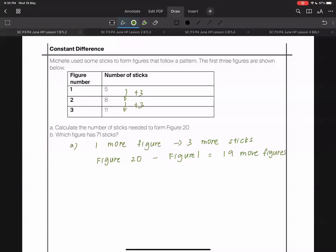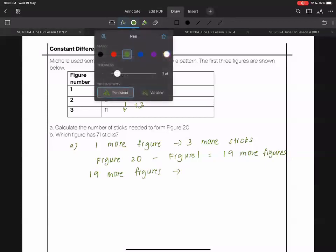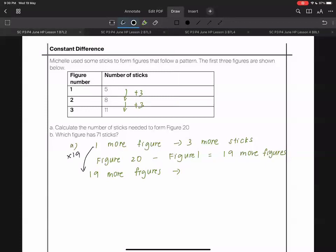How many more sticks would you need? 19 more figures, that would give us 57 more sticks. Three times 19 equals 57 more from the number of sticks in figure one. So 57 plus 5, that would give us 62 sticks.